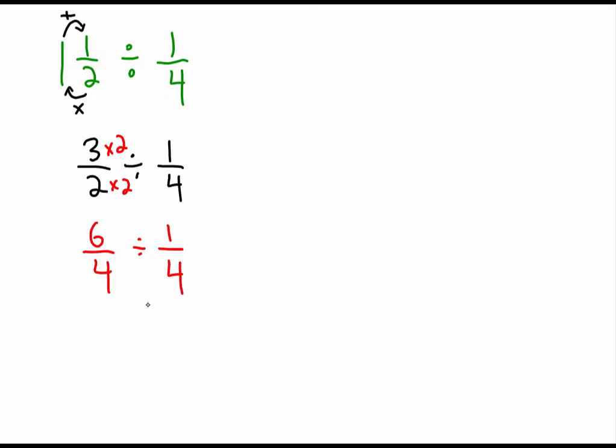And whatever turns into 6 fourths divided by one fourth. Ladies and gentlemen, once you get to this step, all you're going to do is divide these numerators. Just divide them. Go 6 divided by 1 is equal to 6.